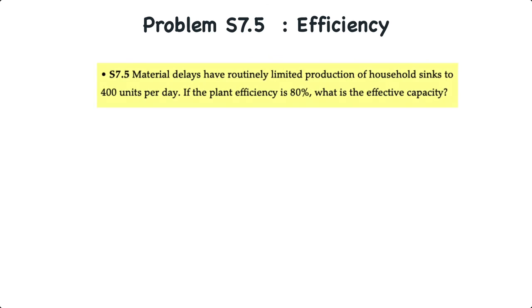Now on to supplement problem 7.5. Material delays have routinely limited production of household sinks to 400 units per day. If the plant efficiency is 80%, what's the effective capacity? This is a variation of the previous problem where we know the efficiency, but this time we know the actual output but not the effective capacity.